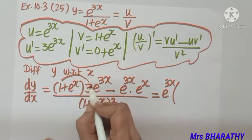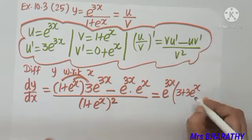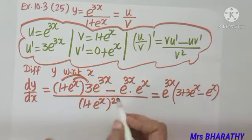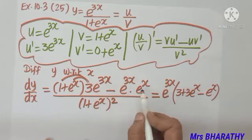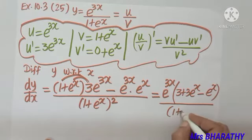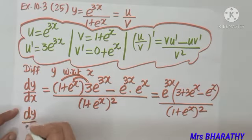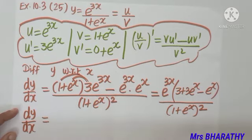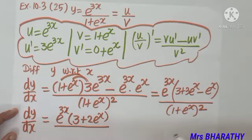Taking e^(3x) as common: 3 − eˣ inside. Simplifying, dy/dx = e^(3x)·(3 + 3eˣ − eˣ) / (1 + eˣ)², which gives e^(3x)·(3 + 2eˣ) divided by (1 + eˣ)².